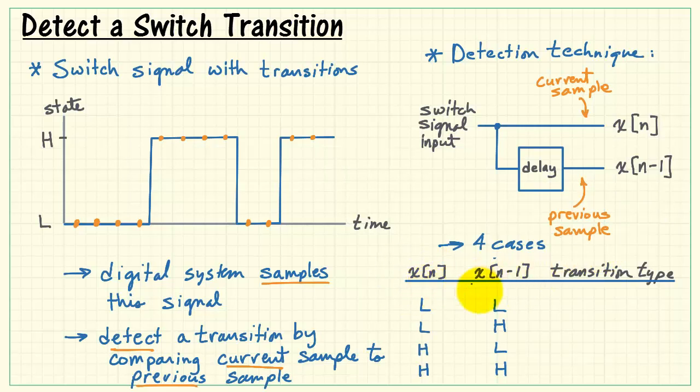We have four cases looking at the previous and the present values in terms of transition type. When the two values remain the same from the current value to the previous value, for example, if the current value is low and the previous value is low, then we have no transition at all. And in a similar fashion, if the current and previous samples are both high, then we also have no transition.